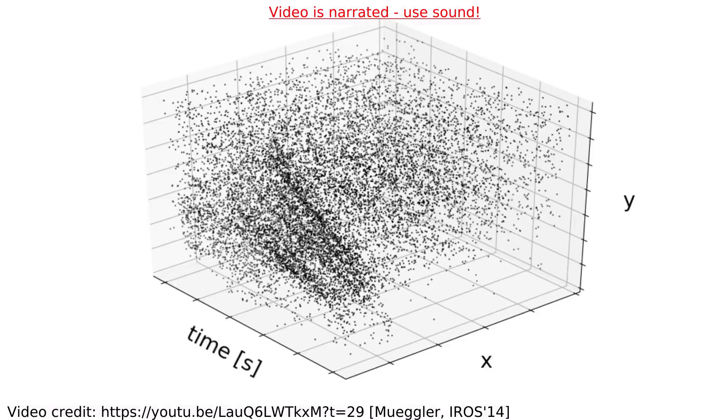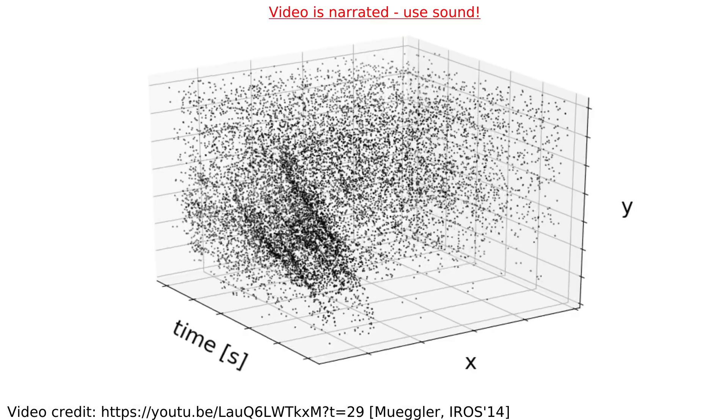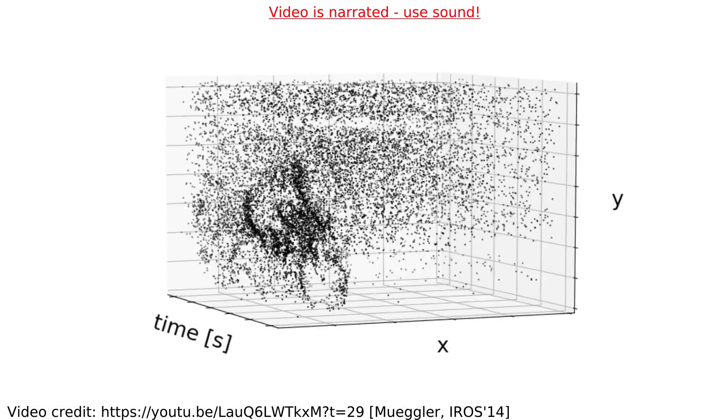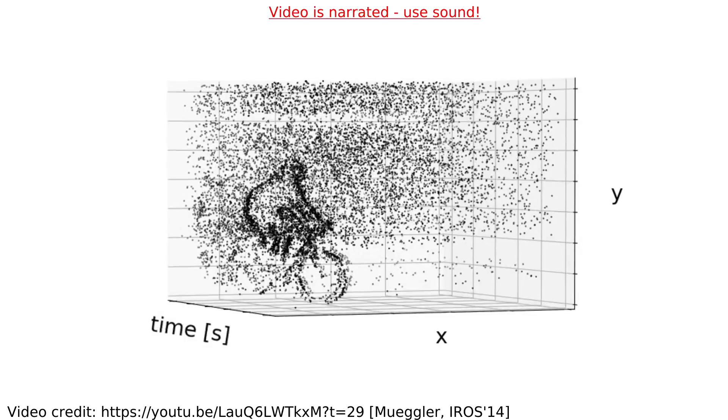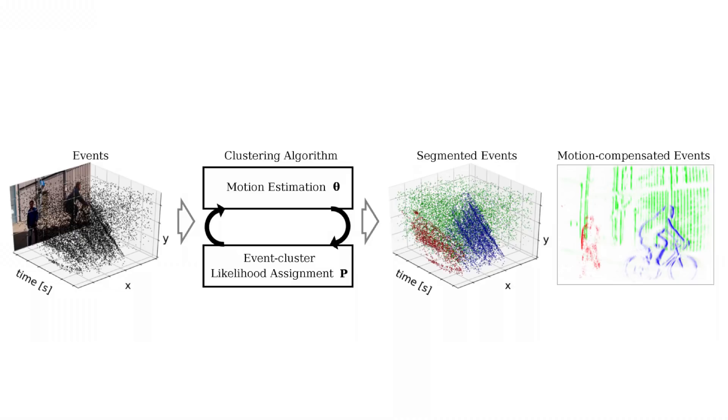However, it can be hard to tell the difference between events that were caused by objects in the scene and events which were generated by ego-motion. In this work, we present a motion segmentation algorithm which takes in a set of events and segments these into the motions that best explain them.